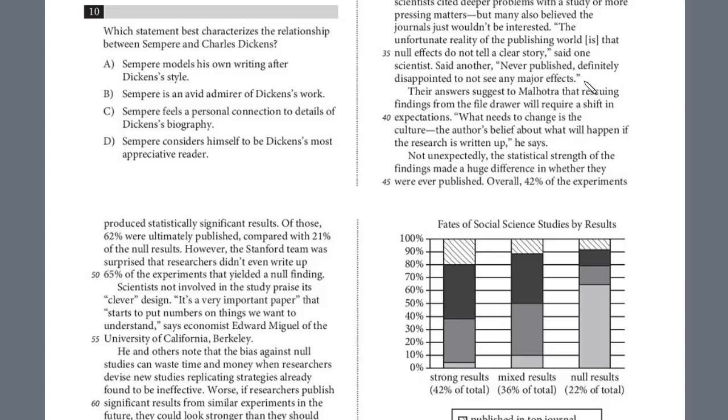So that's right here. Let's see. Never published definitely disappoints to not see any major effects. And so here we do have a little bit of evidence here. But then we've got Malhotra. Again, we're looking evidence that he's strongly object. So let's keep reading. Find a shift. A change needs to happen. Okay, so still no evidence there. Here, the percentages, these relate to the graph. So that's not going to yield the answer.